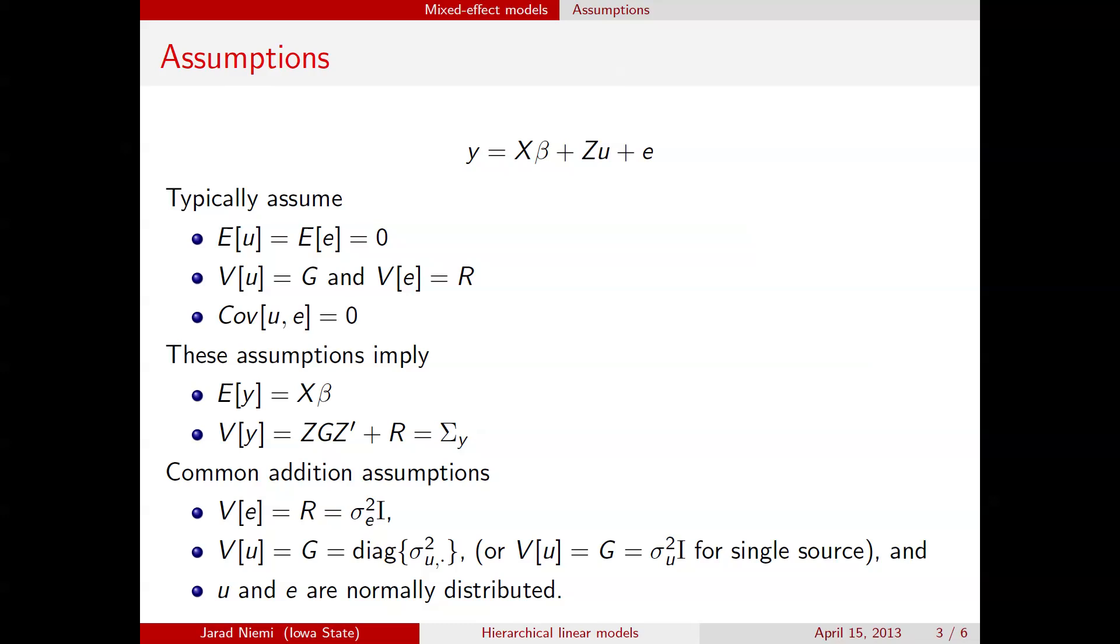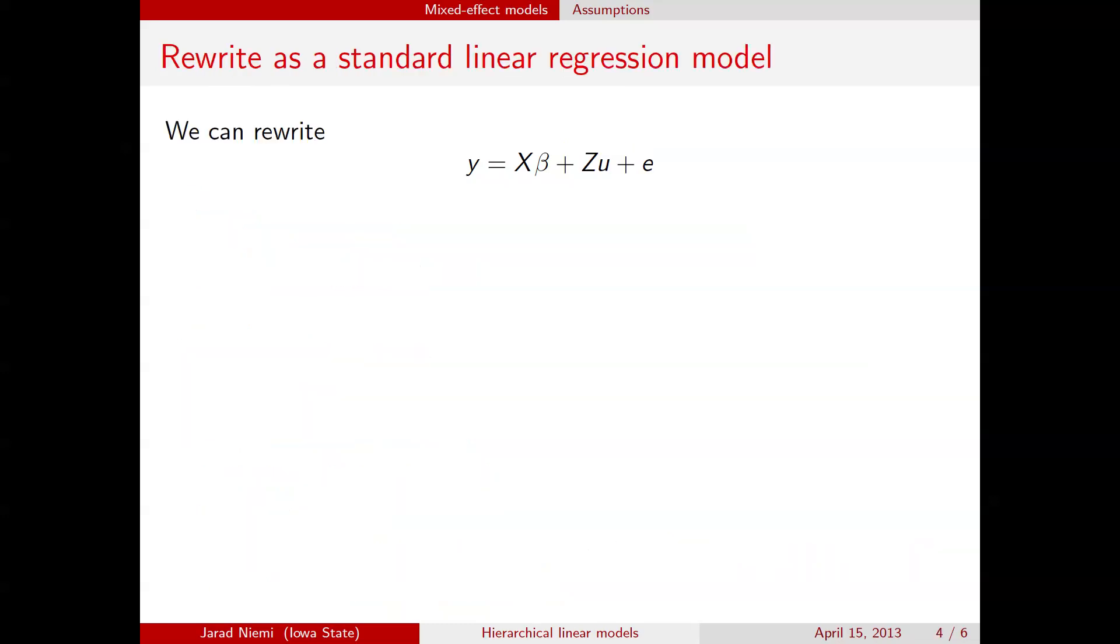And so now we'll move into, actually before we get there, we're going to now rewrite this whole model, but as a standard linear regression model. So this looks like a standard linear regression model, except that we have this extra ZU term here. We're going to then combine these two terms into a single term, and we're going to call that X tilde beta tilde.